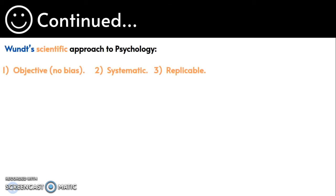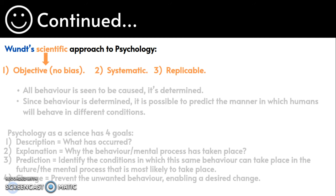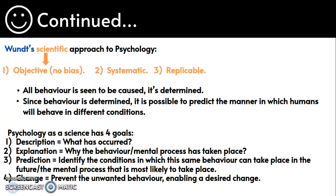Wundt's scientific approach to psychology. If something is scientific, it has to be objective, which means it's not biased; it has to be systematic and it has to be replicable. Wundt's scientific approach to psychology was that all behaviour is seen to be caused — it's determined — and since behaviour is determined, it is possible to predict the manner in which humans will behave in different conditions.